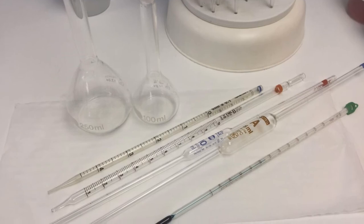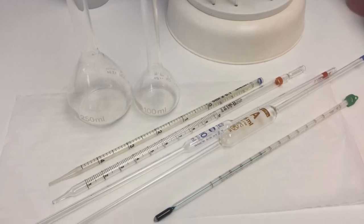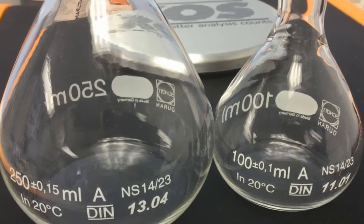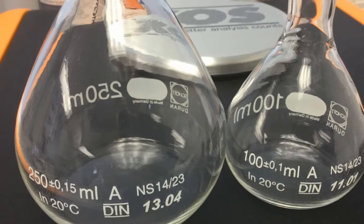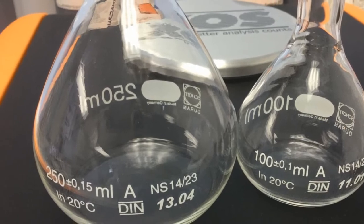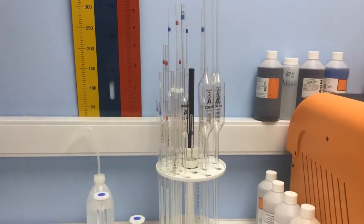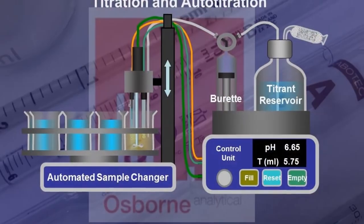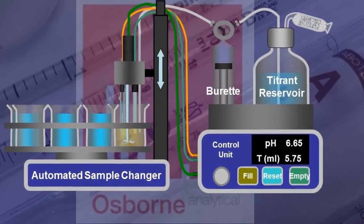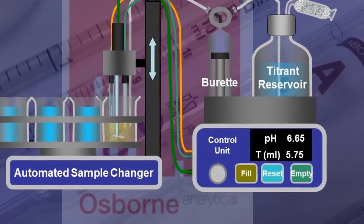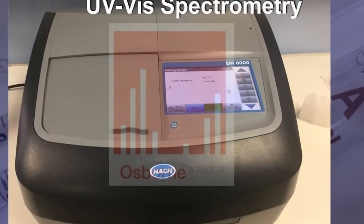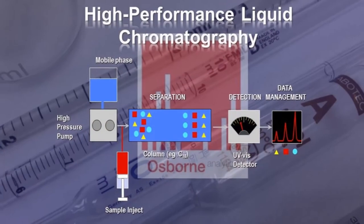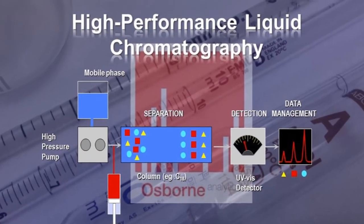Volumetric glassware is used in chemical analysis for withdrawing liquid aliquots, for preparing solutions and dilutions, and for adding exact volumes of reagents. It's the basic equipment in a vast range of titration analyses, and used for sample sizing and dilutions in all types of chemical and instrumental analysis.